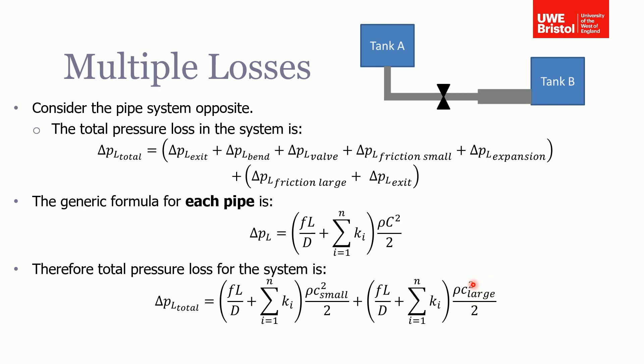So you just need to be aware that you use the correct velocity for each pipe, and if there's a change in material or a change in diameter, then you need to split your network up into different sections and add all those sections together.